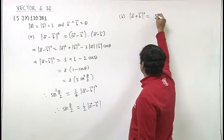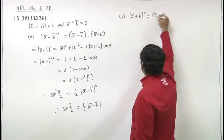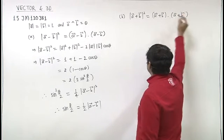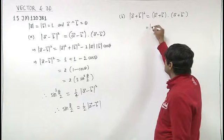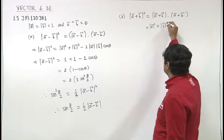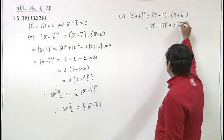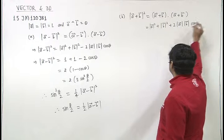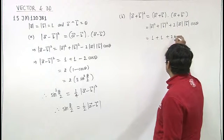Mod of a plus b whole square can be written as a plus b dot a plus b. Expanding, this equals magnitude of a squared plus magnitude of b squared plus twice a dot b, that is magnitude of a times magnitude of b times cos theta. Since we have unit vectors, this gives one plus one plus two cos theta.